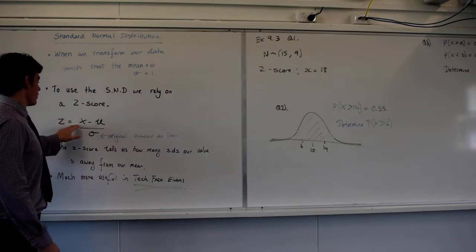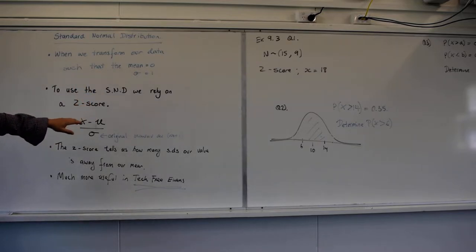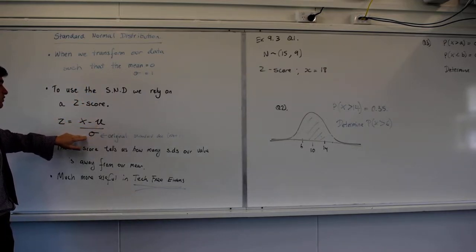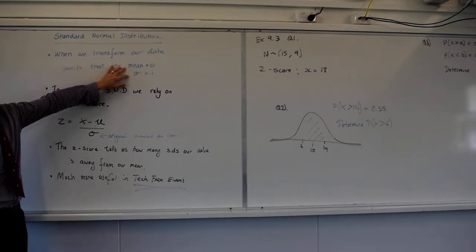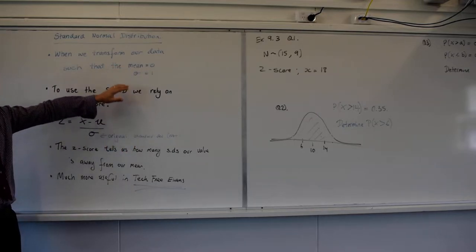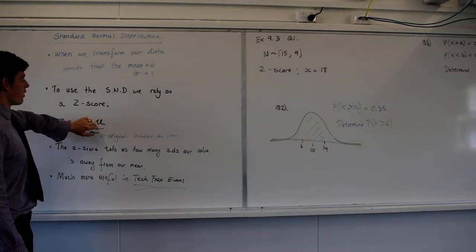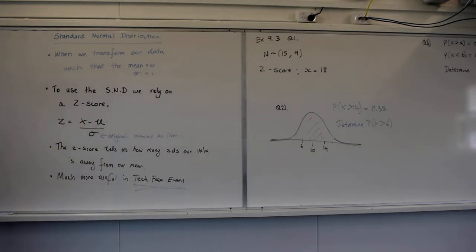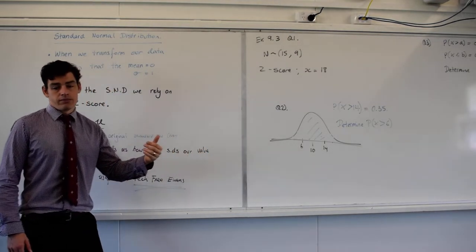The Z score can be found by taking our score, x or whatever our score is, and I'll run through an example on the board in a second, minus our original mean divided by our standard deviation. Please note we are not minusing by zero and dividing by one. That does nothing. So this is the mean and the standard deviation of our original data set. The Z score tells us how many standard deviations we are away from our mean.